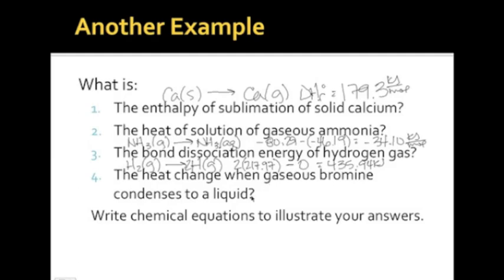The heat change when gaseous bromine condenses to a liquid, so Br2 gas condensing to Br2 liquid. The gas, I mean, I'm sorry, starting with the products. The liquid bromine is its natural state of bromine, so it's going to be a zero. Subtract out the delta HF zero of the reactants, which is a positive 30.70, and so you end up with negative 30.70 kilojoules.